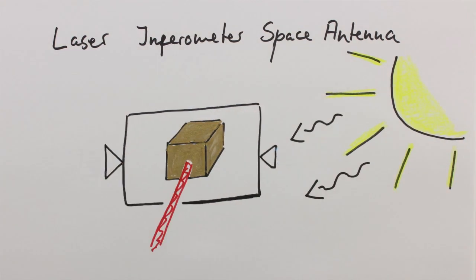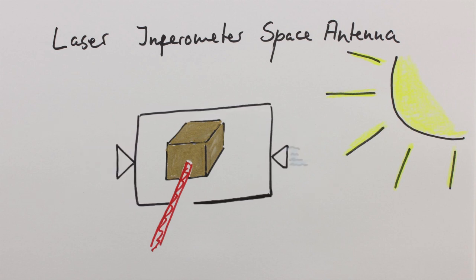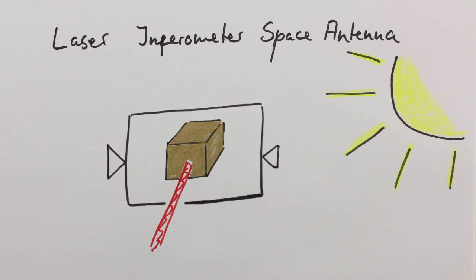When the solar wind pushes on the satellite, the so-called drag-free control system will steer the satellite to make sure it never hits the test mass. This means that the test masses only follow the deformation of spacetime and are isolated from all other disturbances.